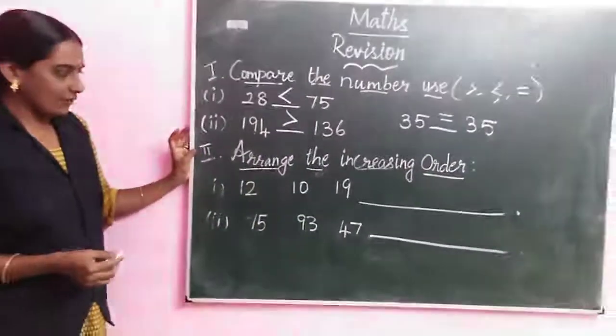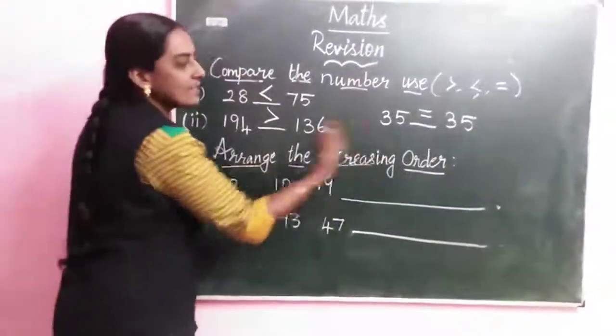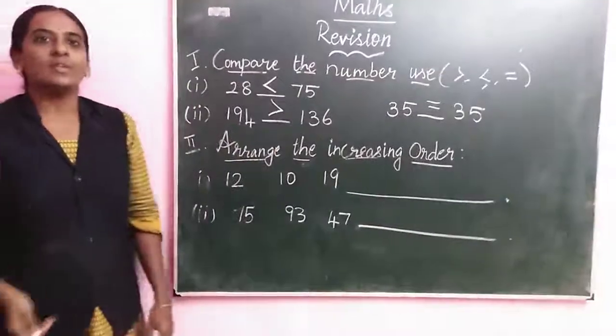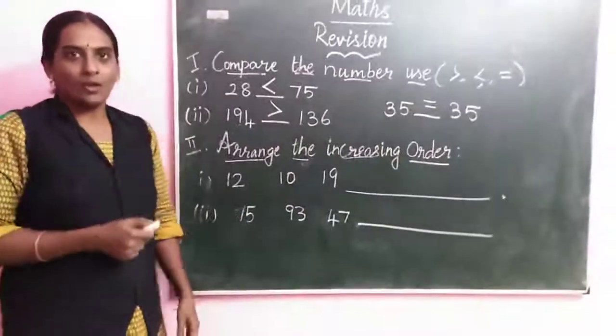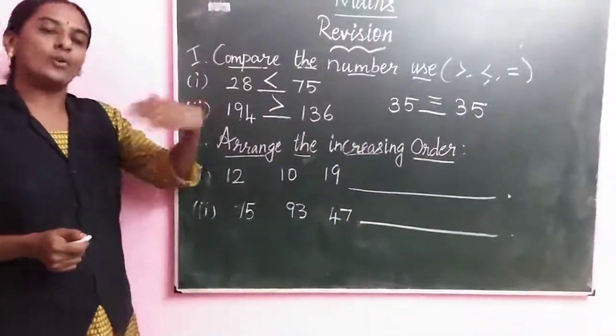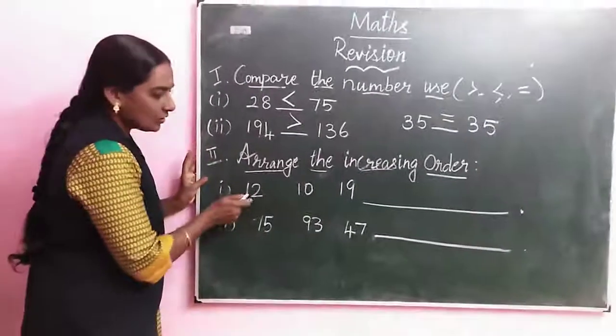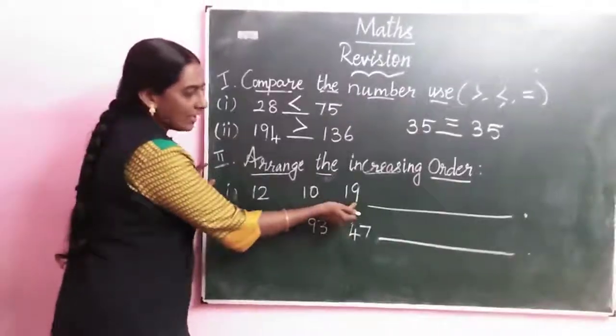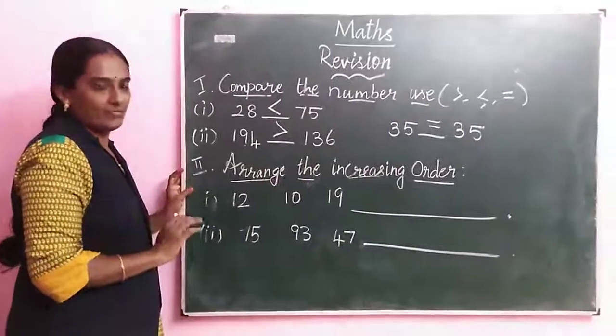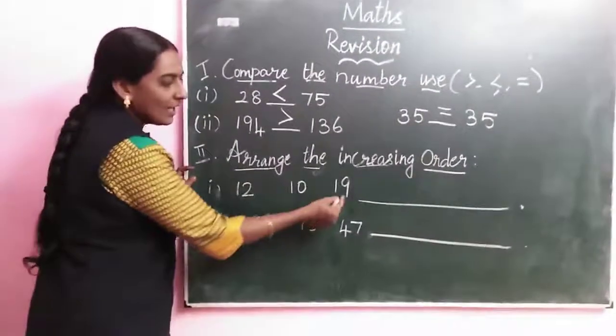Next, we are going to the second one. Arrange in increasing order. Increasing order means small to big number. We are going from small to big number. First question: 12, 10, 19. First, read the question. 12, 10, 19.